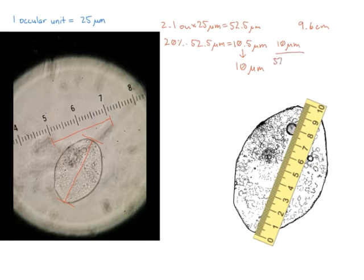We're going to take 10 micrometers divided by 52.5 micrometers, the length of your scale bar to the length of your organism, and set that equal to x, which is the length of your scale bar in your drawing, to 9.6, the length of your organism in your drawing.